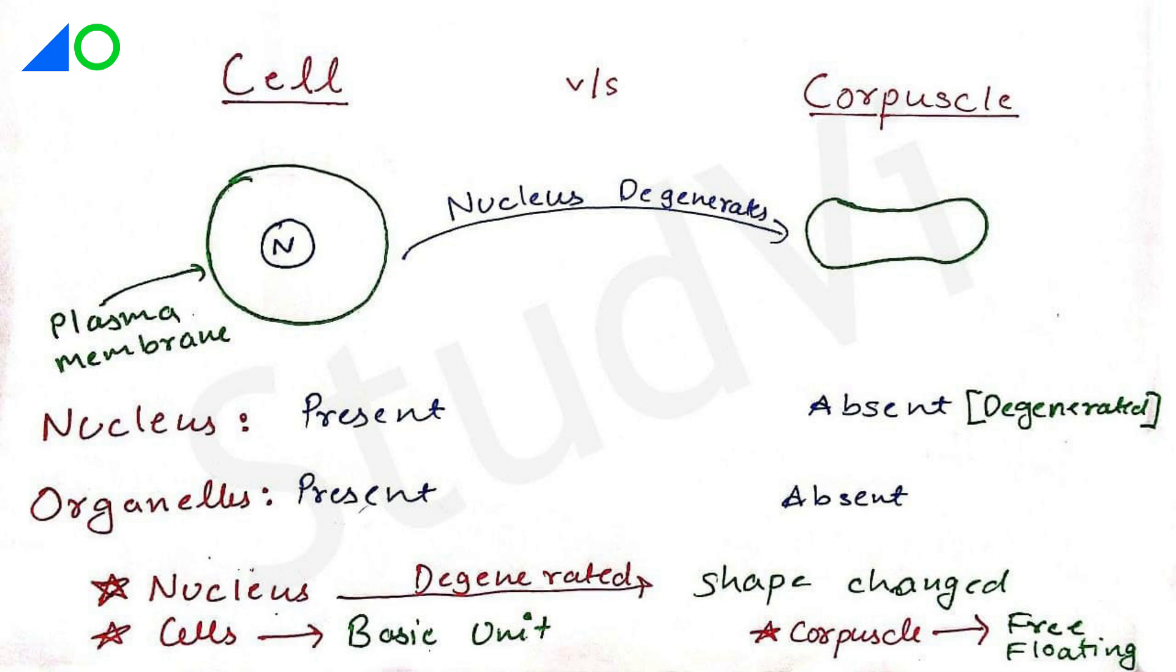The first difference is that in a cell there is a nucleus present, but in a corpuscle, basically the nucleus is degenerated. As you can see in this diagram as well.